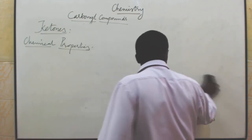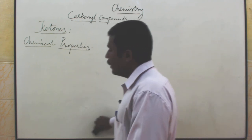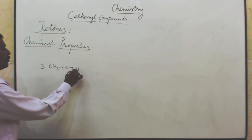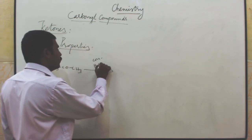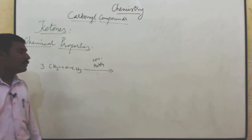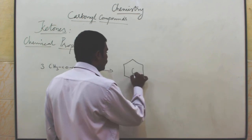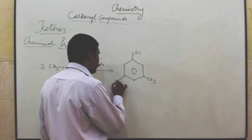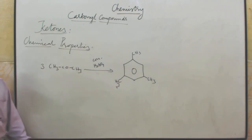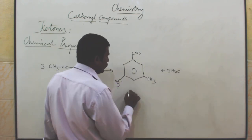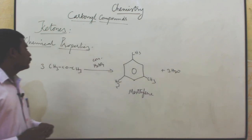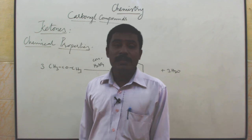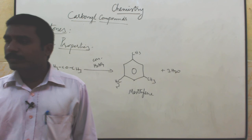Last one, very important: how to prepare mesitylene. Acetone reacts with concentrated sulfuric acid — taking three molecules of acetone, 3 CH3COCH3, reaction takes place in the presence of concentrated sulfuric acid. You will get mesitylene as the product. Mesitylene is a benzene ring with three methyl groups — 1,3,5-trimethylbenzene — plus three molecules of water. This is a cyclic product named mesitylene.